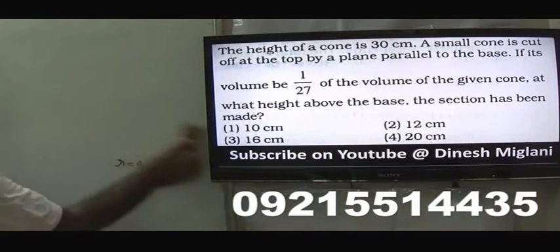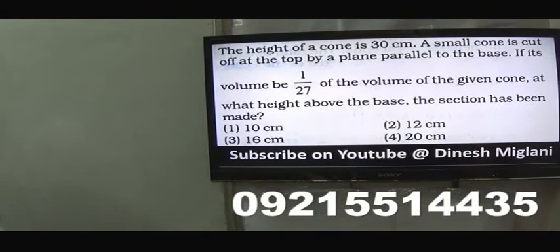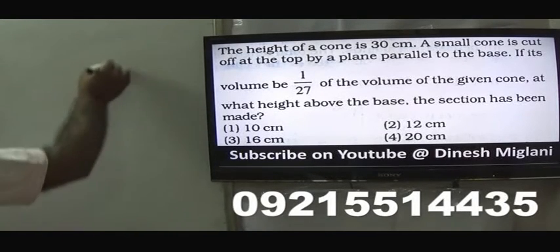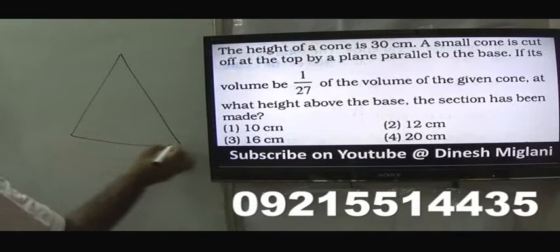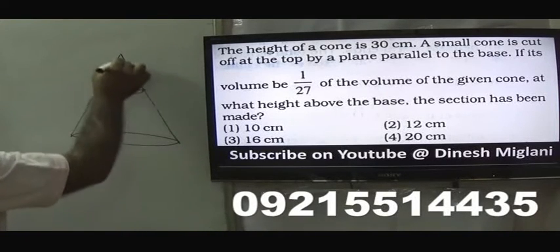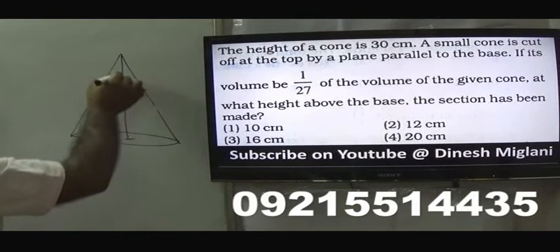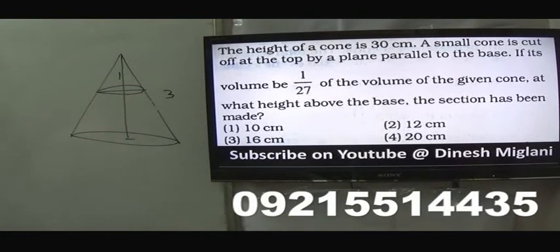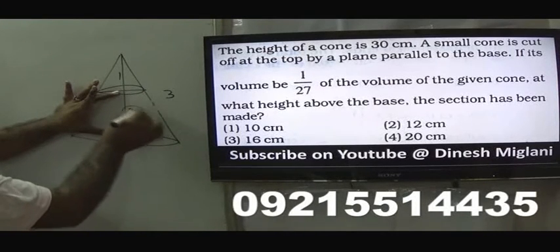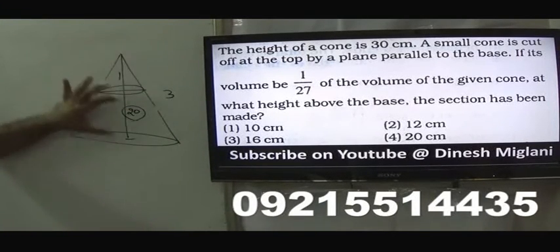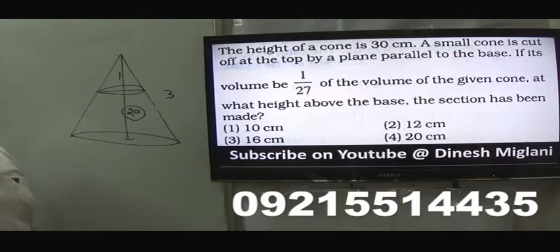Next question: height of a cone is 30 centimeters. A small cone is cut off at the top by a plane parallel to the base. Its volume is 1/27th of the volume of the given cone. At what height above the base has the section been made? If the small cone's volume is 1/27th of total, then the ratio of heights is the cube root of 1/27 = 1/3. So the small cone height is 10 cm from the top, meaning the cut is at 20 cm above the base. Fourth option is my answer.